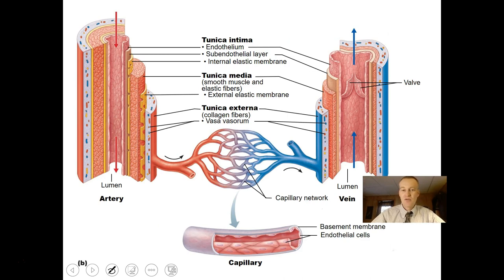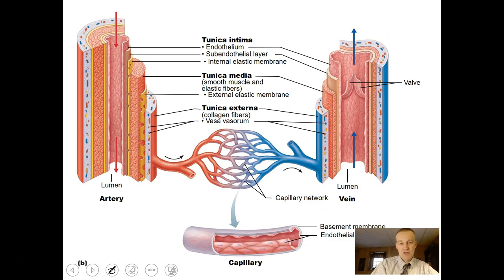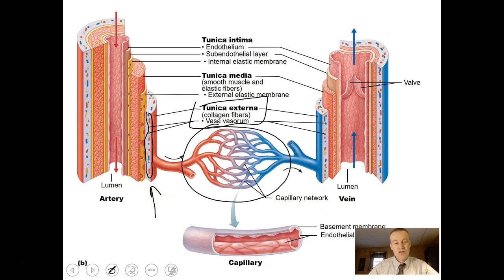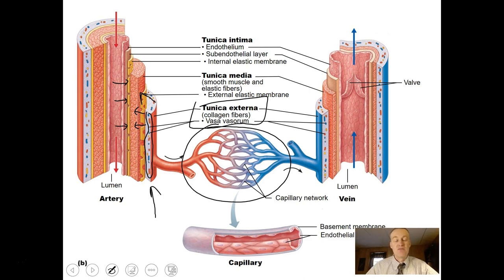Another view shows capillaries connected to arteries and veins. The tunica externa has elastic fibers, collagen fibers, and blood vessels inside of it. Many people don't realize that an artery or a vein is an organ, and organs have to be fed by blood vessels. There are literally blood vessels going to the tunica externa to feed the muscle tissue nutrients. There are also nerves there so you can sense any damage to that particular vessel.